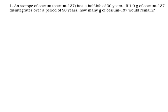An isotope of cesium, cesium-137, has a half-life of 30 years. If we've got one gram of cesium and it disintegrates over a period of 90 years, how many grams of cesium would remain? Okay, so firstly, let's work out how many half-lives are we going to go through. Well, 90 divided by 30 is three half-lives.